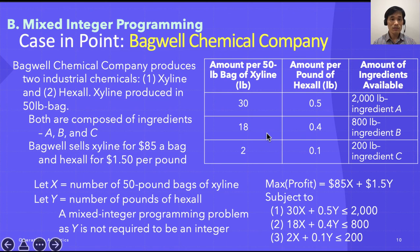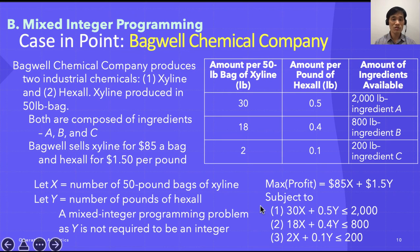Let's set the problem up. The objective is to maximize profit: you make $85 per bag of Xylene and $1.50 per pound of Hexol, so maximize 85X + 1.5Y. The constraints are: 30X + 0.5Y ≤ 2000 for ingredient A; 18X + 0.4Y ≤ 800 for ingredient B; and 2X + 0.1Y ≤ 200 for ingredient C.